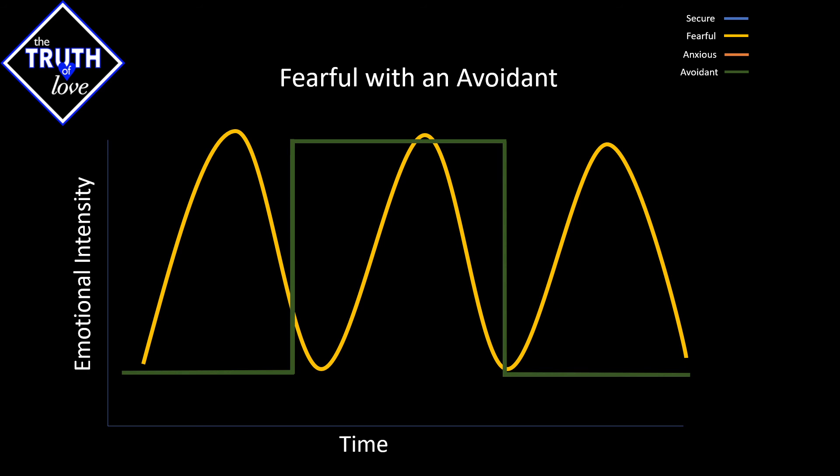When a fearful dates an avoidant, we have a bit of a paradox in the sense that the idea is that these waves will overlap with good time, and when they do overlap, both parties feel like they're on a high, both of them feel they've found quote the one, but they also simultaneously tend to downfall at the same time, usually with the same triggers.